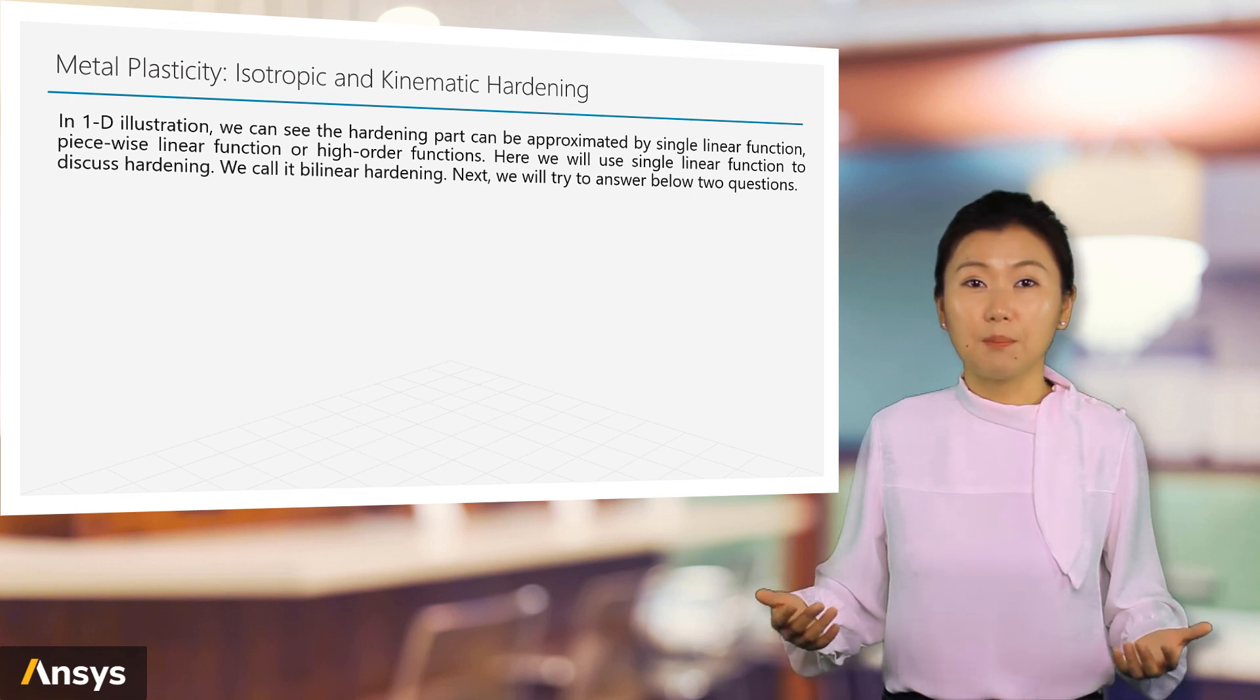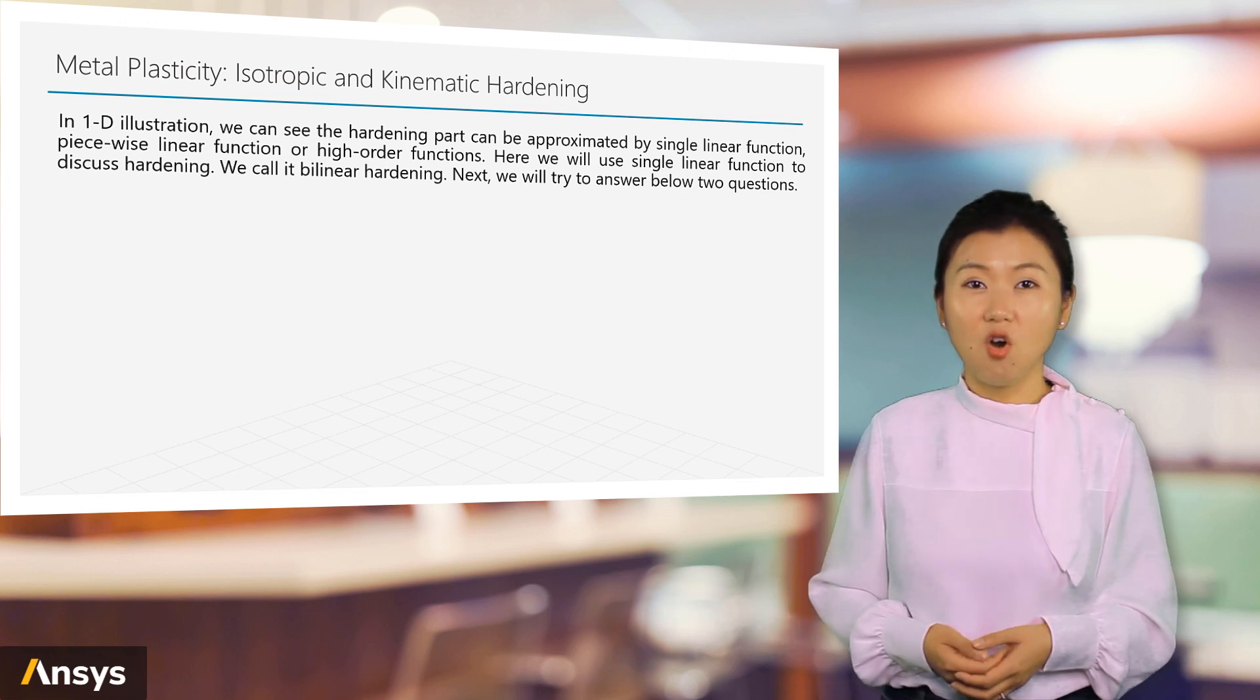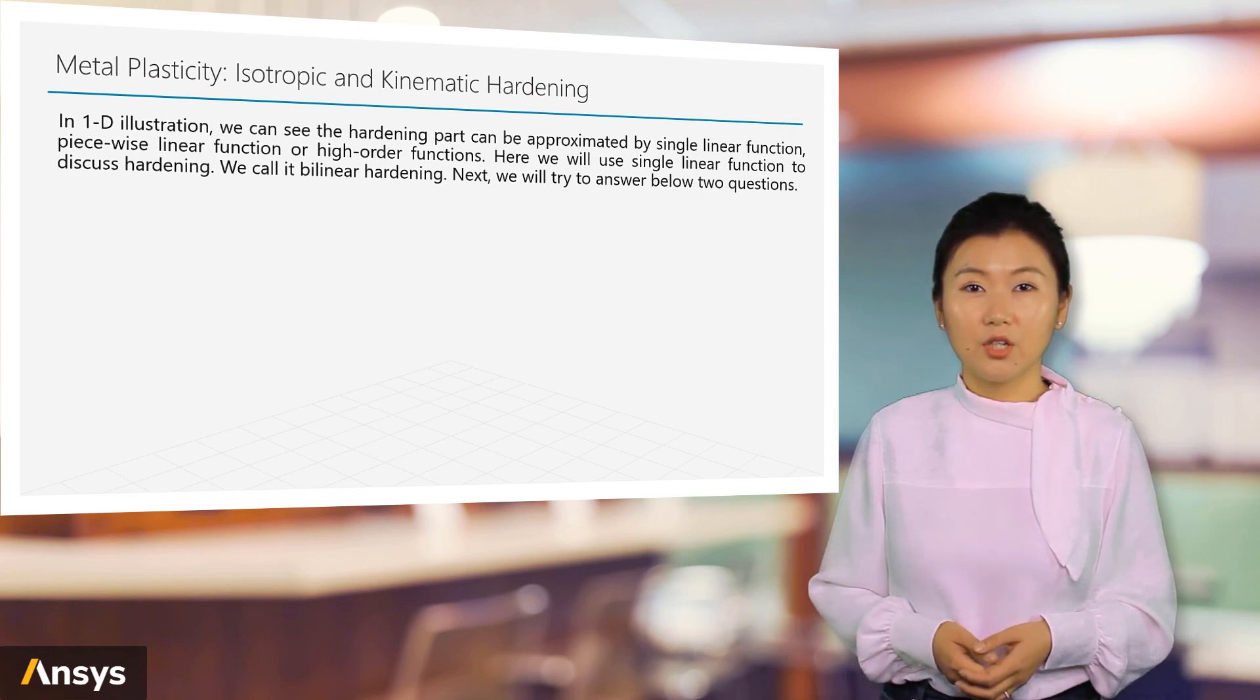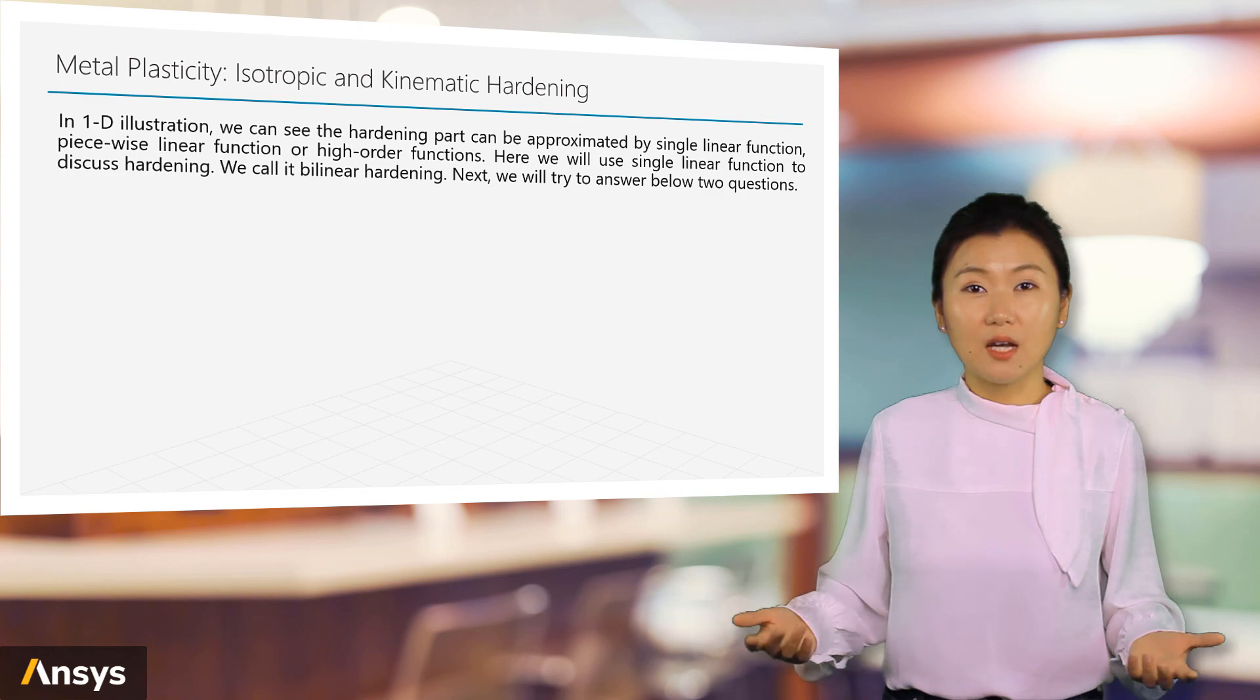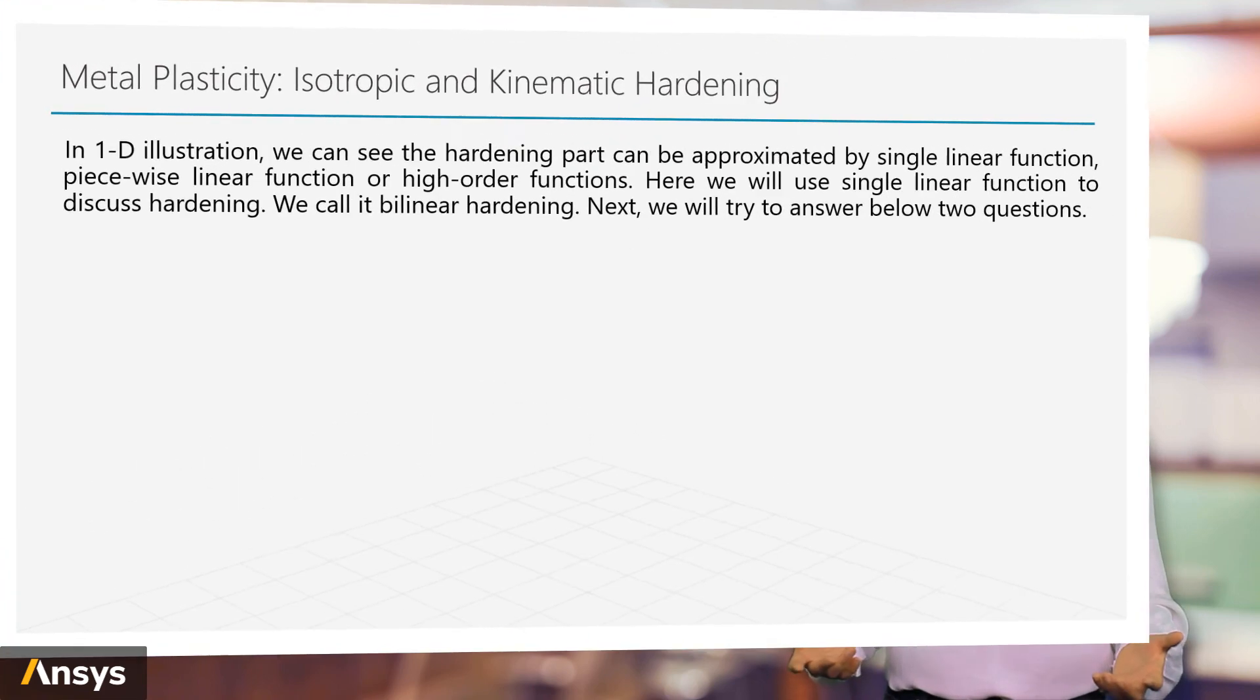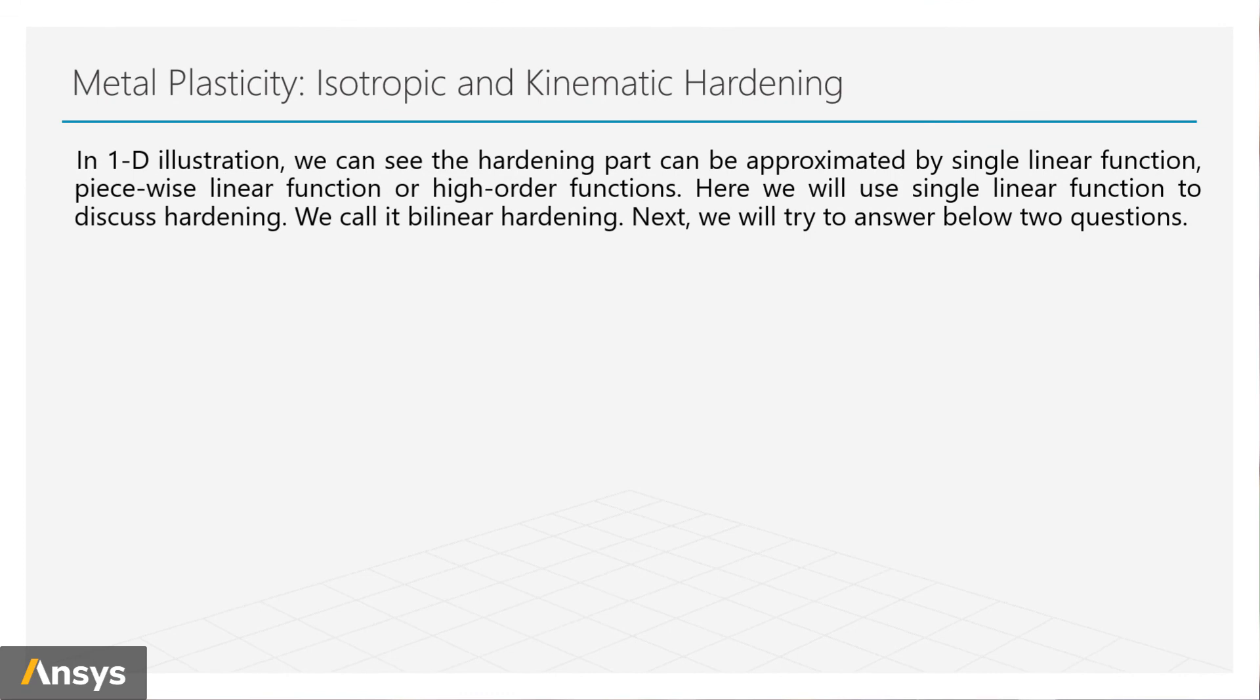The hardening part can be approximated by single linear function, piecewise linear function, or higher order functions. Here we will use single linear function as the example to discuss hardening. You will see the stress-strength curve is composed with two parts of linear functions: one for elasticity and the other one for hardening. We call this bilinear hardening.